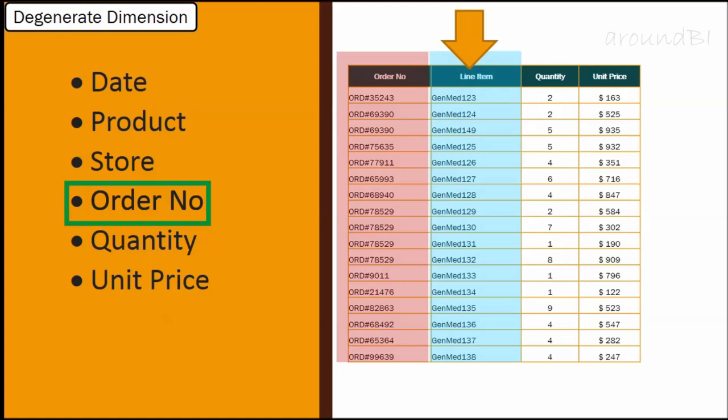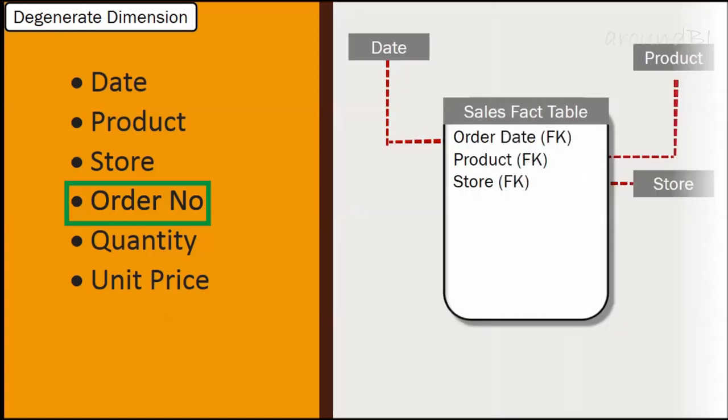So the best approach is to keep order number with the fact table. Since order number is a dimension that sits in the fact table and does not have its own dimension table, by definition it comes into the category of degenerate dimension.